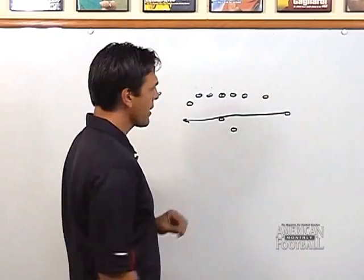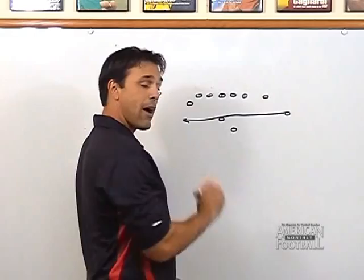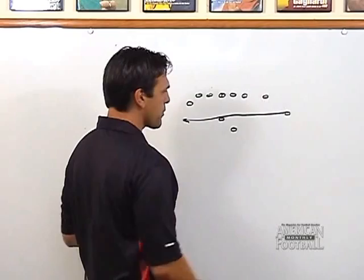This causes a reaction by the defense — either a rolling, a sliding, some type of reaction in order to get defenders over this part of the field. The route combinations on the waggle are very simple. The first receiver to the side that we are rolling to — let's talk about receiver routes.